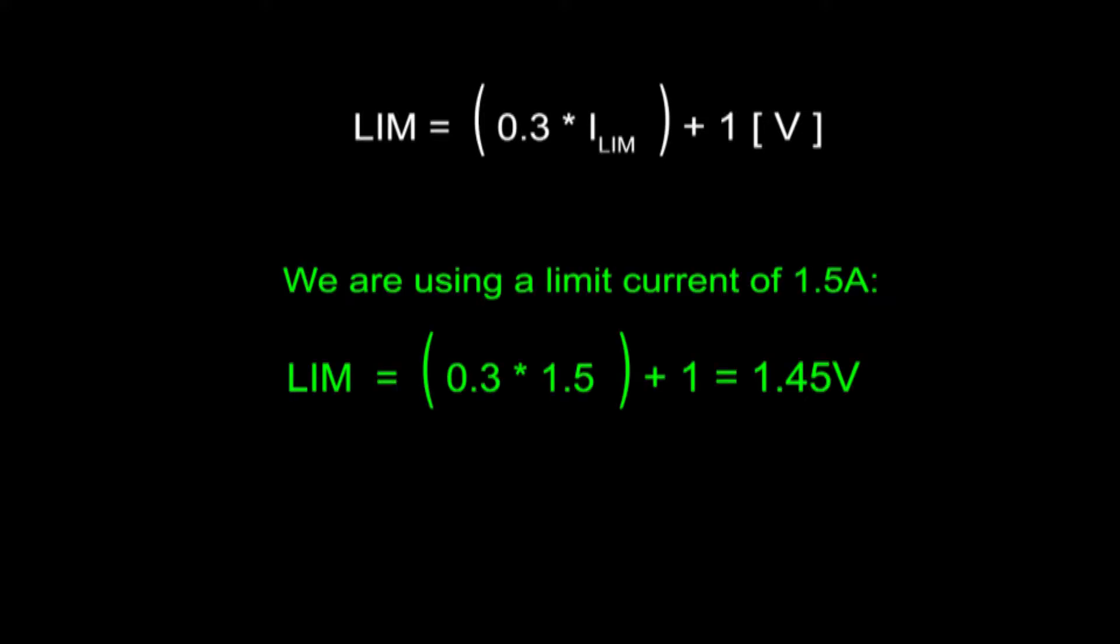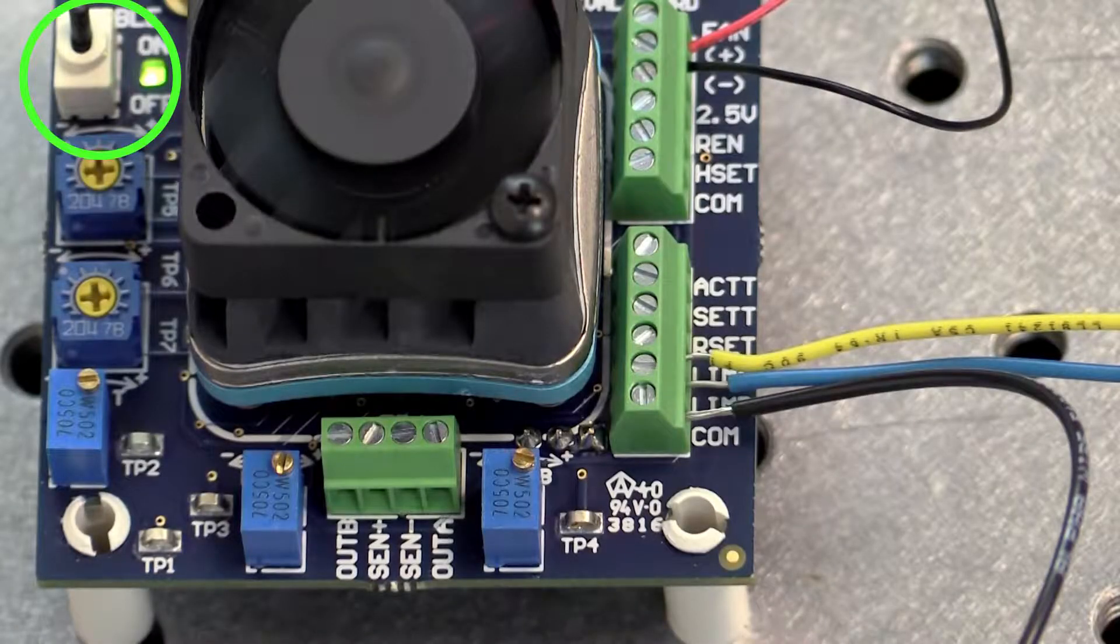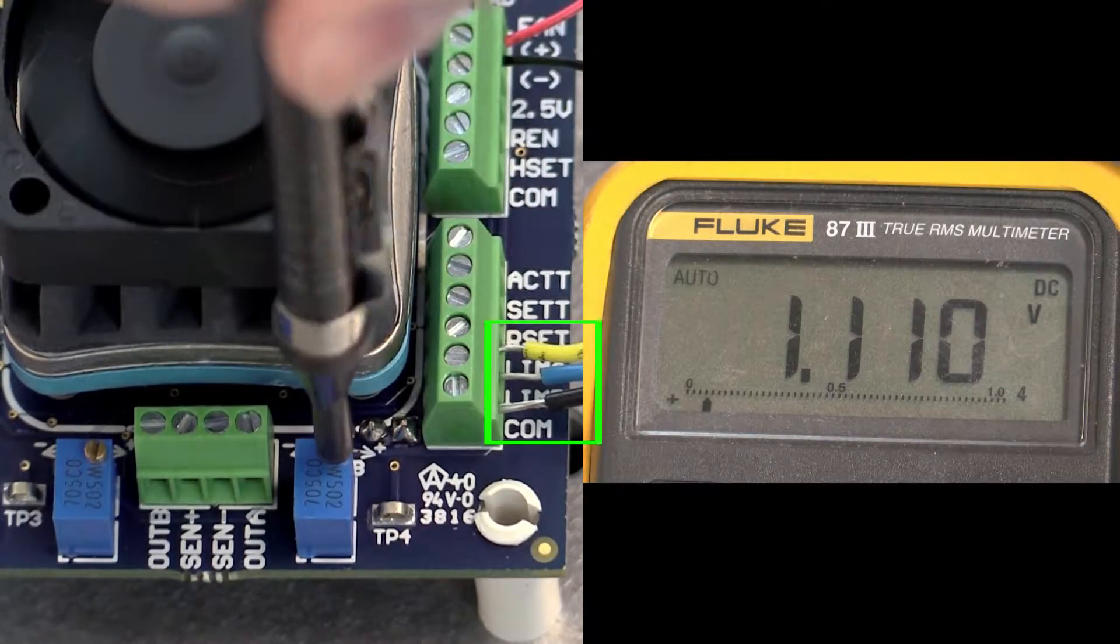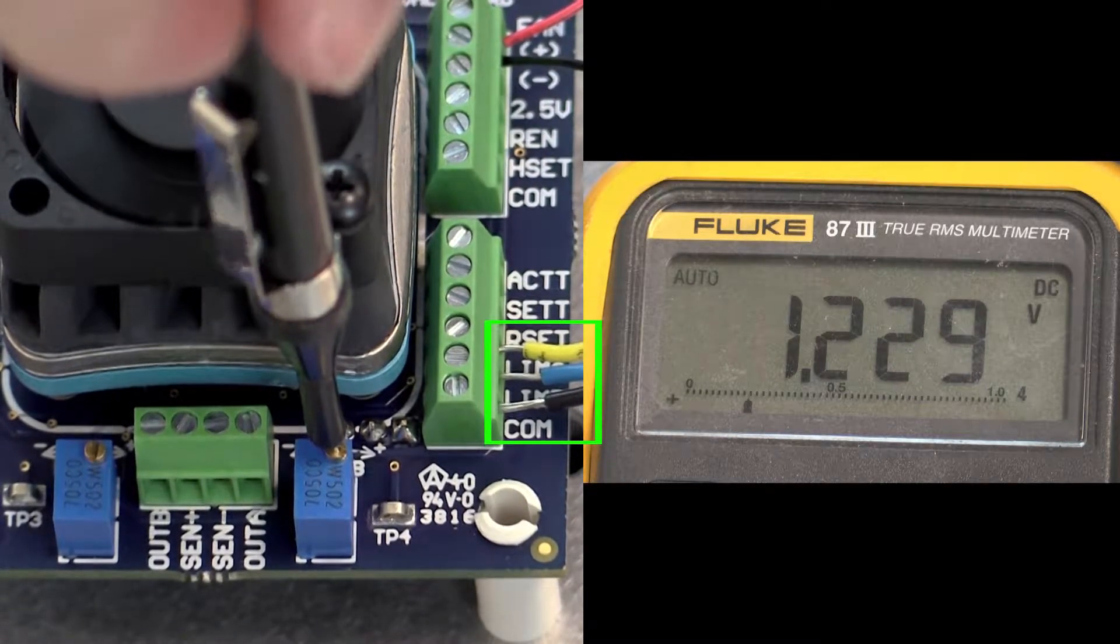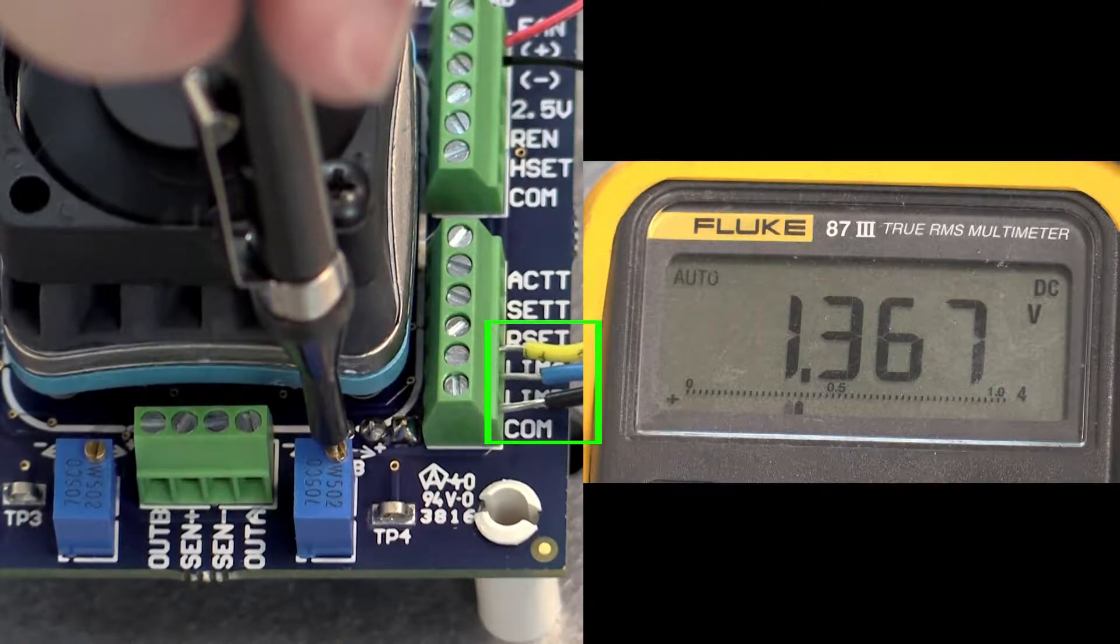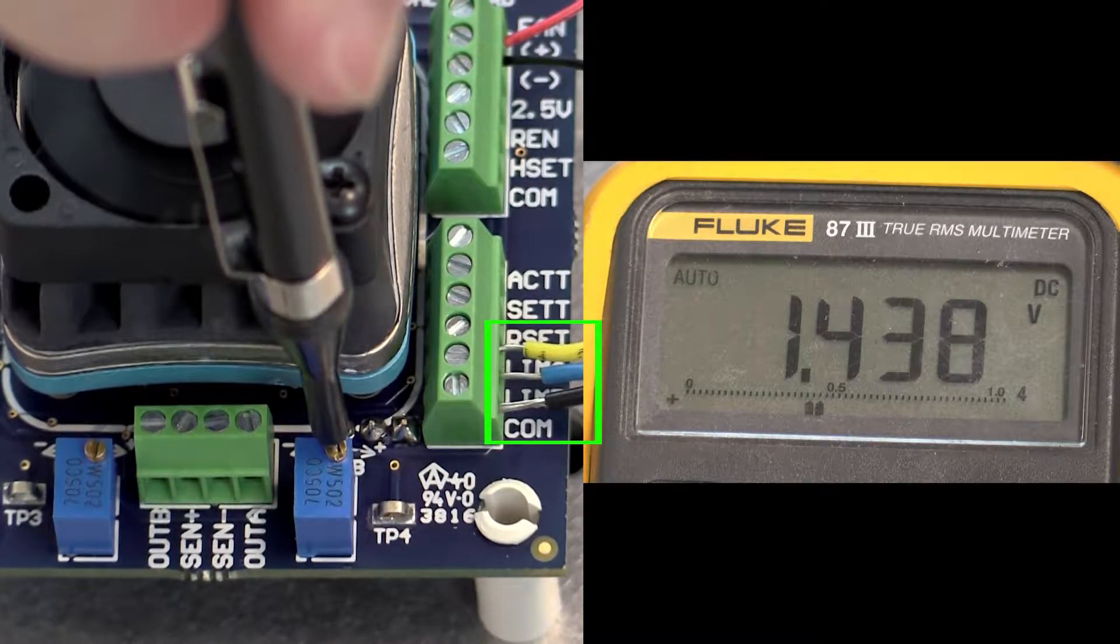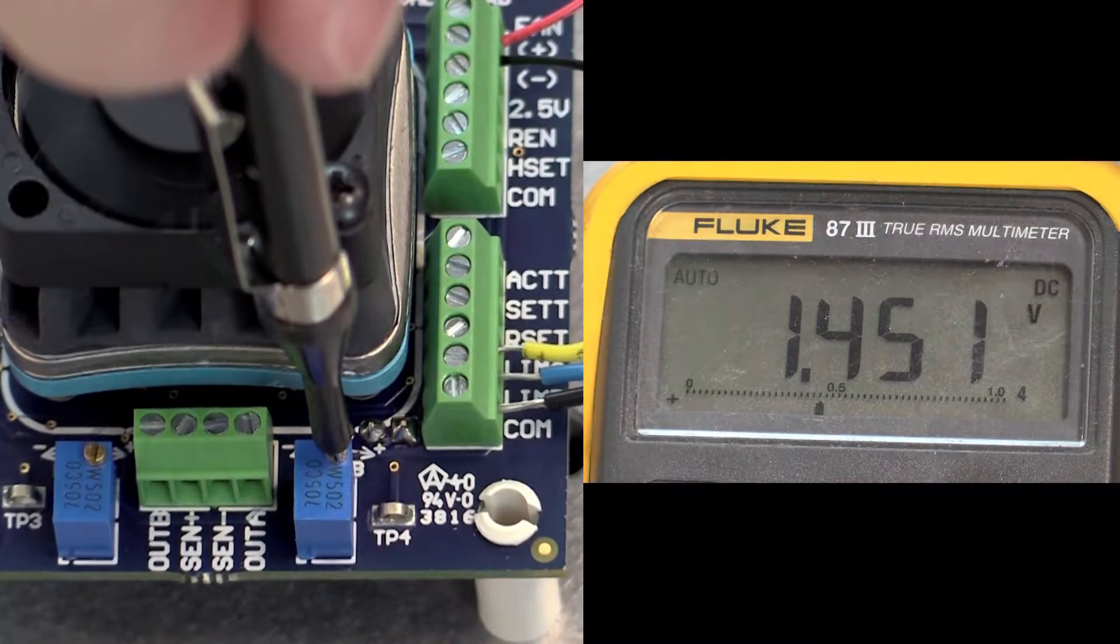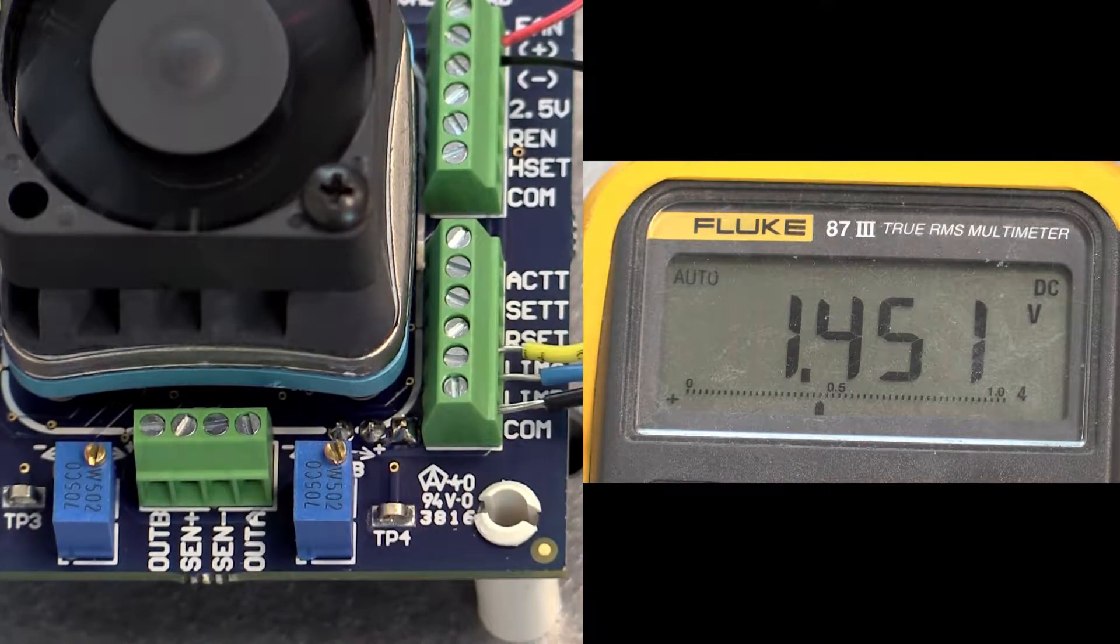Once the limit values are determined, toggle the enable to ON to apply power to VDD and VS. No load required. Rotate the LIM trim pot and monitor the respective voltage at LIM A and LIM B on TB3. Use COM as ground reference. Turn the trim pots counterclockwise to reduce the limits or clockwise to increase them.